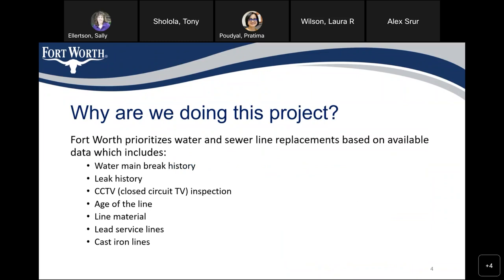Why are we doing this project? The City of Fort Worth prioritizes water and sewer line replacement based on several available data, which includes water main break history, leak history, CCTV inspection data for the sewer lines, age of the lines, line material, whether the line has a lead service connected to it, and whether the water lines are cast iron lines.